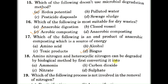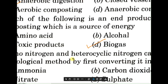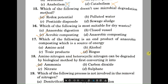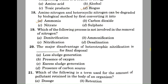Question number eighteen: amino nitrogen and heterocyclic nitrogen can be degraded by biological methods by first converting them into — A: ammonia, B: carbon dioxide, C: nitrate, D: sulfate. The correct answer is A, ammonia. The process is called deamination, where ammonia is removed and further degradation proceeds.